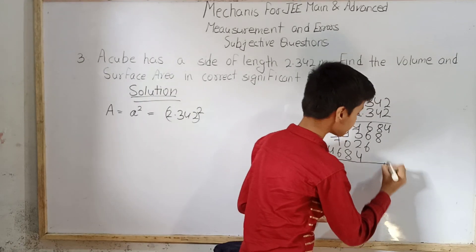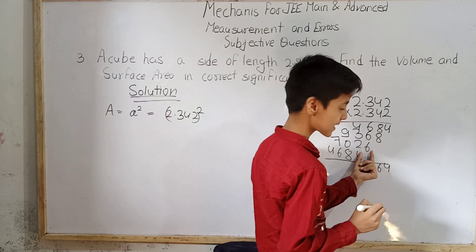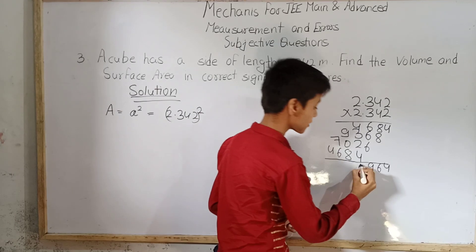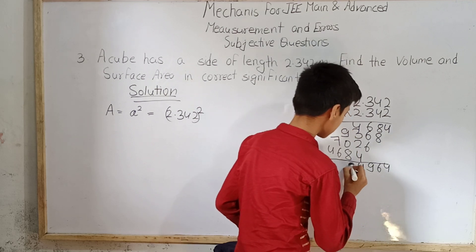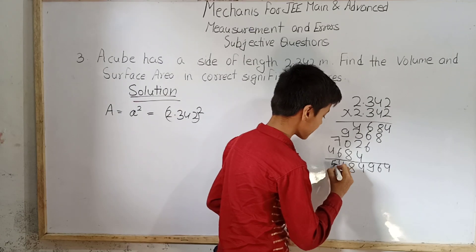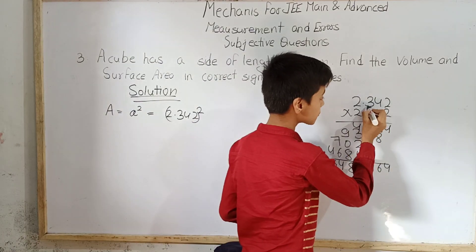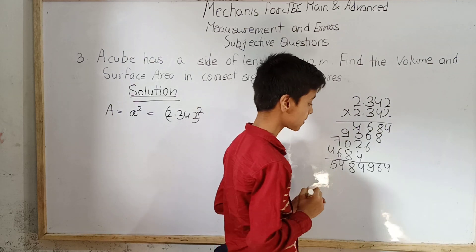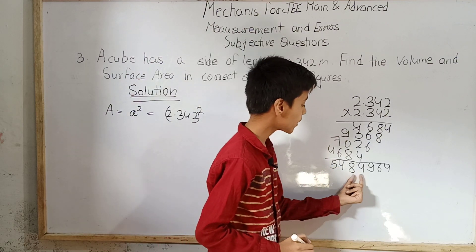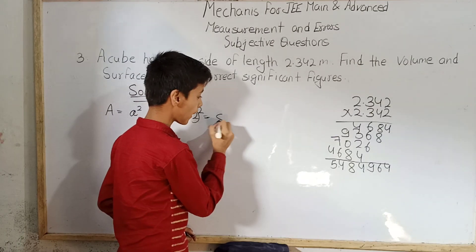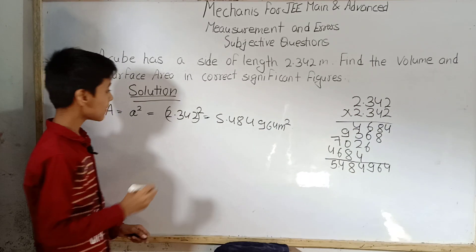Adding up the partial products: 8+8=16 (6, carry 1); 6+6+6=18+1=19 (9, carry 1); continuing through all digits and determining decimal placement — we count 1, 2, 3, 4, 5, 6 decimal places. The result is 5.484964.